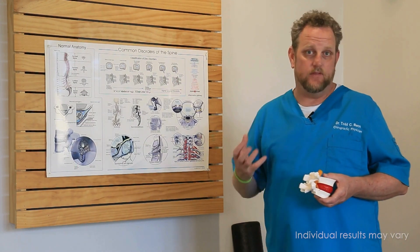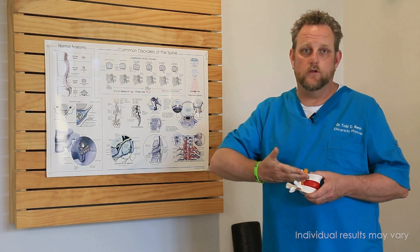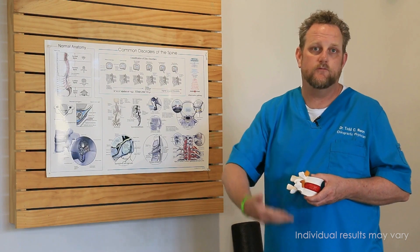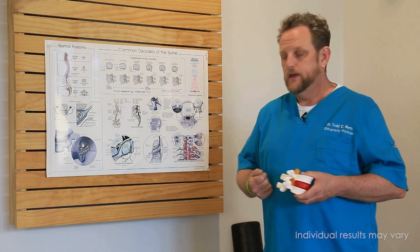Sciatic pain down the back of the leg typically involves the lower lumbar spine - L4-L5 or L5-S1, the last two vertebrae.